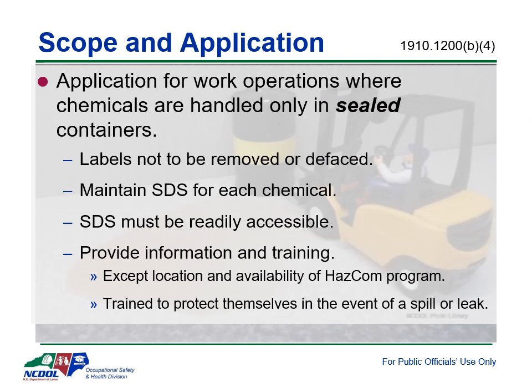In work operations where employees only handle chemicals in sealed containers that are not open under normal conditions of use, this section applies as follows: Labels must be maintained on incoming containers of hazardous chemicals and cannot be removed or defaced. Safety data sheets must be received with incoming shipments and must be maintained. If a shipment is received without a safety data sheet, the employer must obtain a copy. Safety data sheets must be readily accessible to employees during their work shift, and employers must ensure employees are trained to protect themselves in the event of an accidental spill or leak from a sealed container.